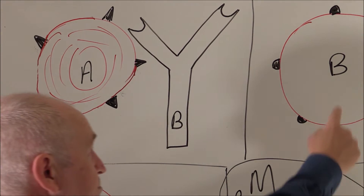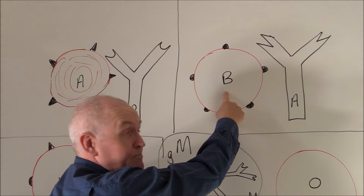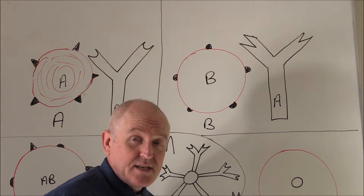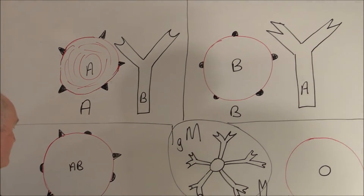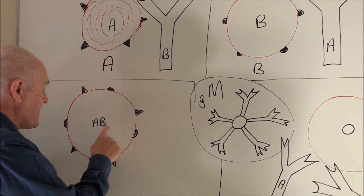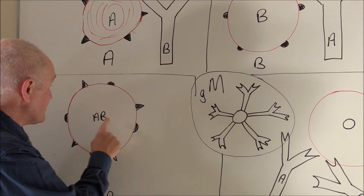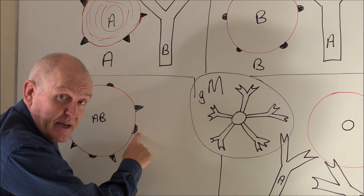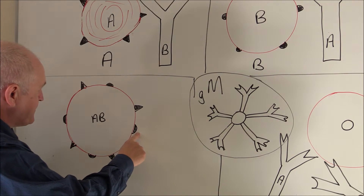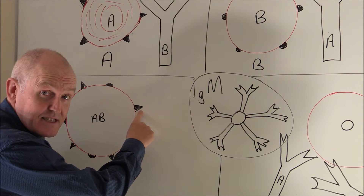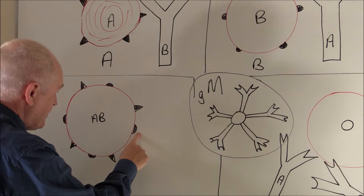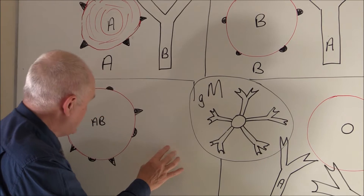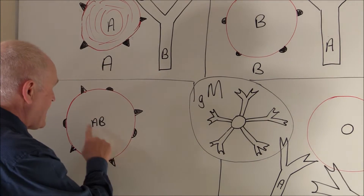If someone's blood group B, it's the red cells that are B, but there's going to be anti-A antibodies in the plasma. If someone's blood group AB, they're blood group AB because it's the red cells that have the A and the B antigens. This is the way we've drawn an A antigen and this is the way we've drawn a B antigen. And as you can see, there are no antibodies in the blood if someone is AB.